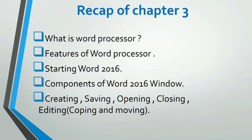Now this is the end part of the chapter. We will take a recap of chapter 3 — what we have learned in the entire chapter: what is a word processor, features of a word processor, starting Word 2016, components of the Word 2016 window including quick access toolbar, title bar, ribbon, workspace and status bar. And in this video, we have seen creating, saving, opening, closing and editing, copying and moving.